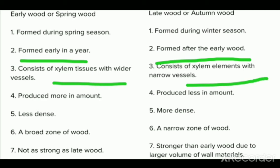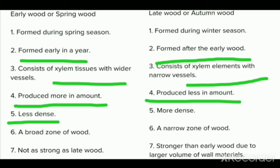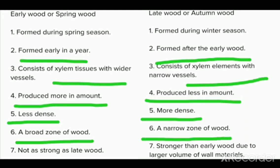Fourth point: early wood is produced in more amount, and late wood is produced less due to less activity. Fifth point: early wood has a lighter and less dense color structure, while late wood is more dense in structure compared to early wood. Sixth point: early wood has more width in the stem, forming a broad zone of wood, while late wood forms a narrow zone. Seventh point: early wood is not as strong as late wood — late wood is stronger than early wood due to its larger volume of cell wall.